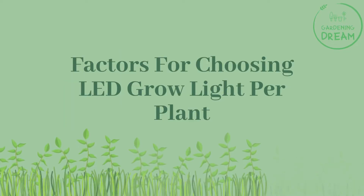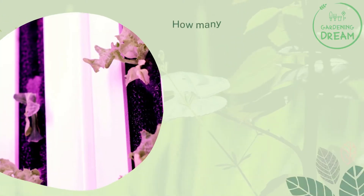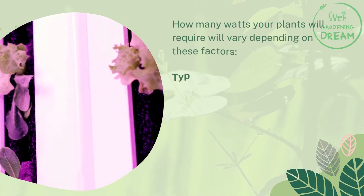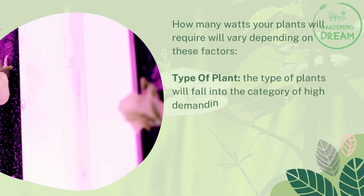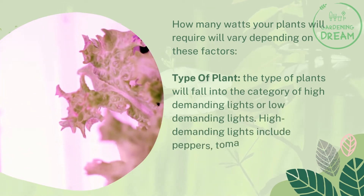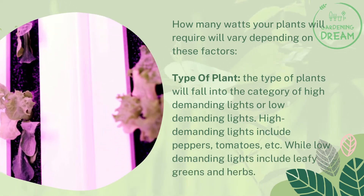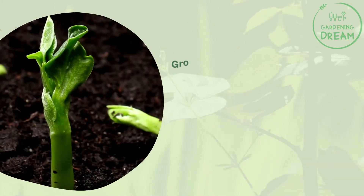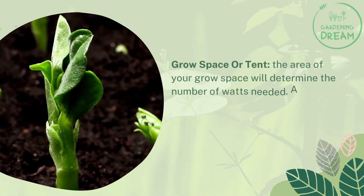How many watts your plants will require will vary depending on these factors. Type of plant: plants fall into the category of high demanding lights or low demanding lights. High demanding lights include peppers, tomatoes, etc., while low demanding lights include leafy greens and herbs. Grow space or tent: the area of your grow space will determine the number of watts needed.